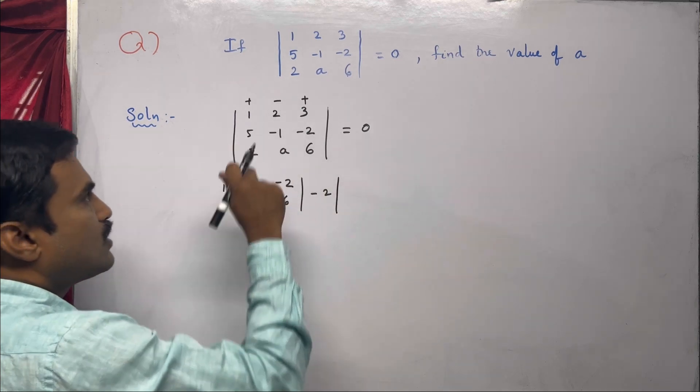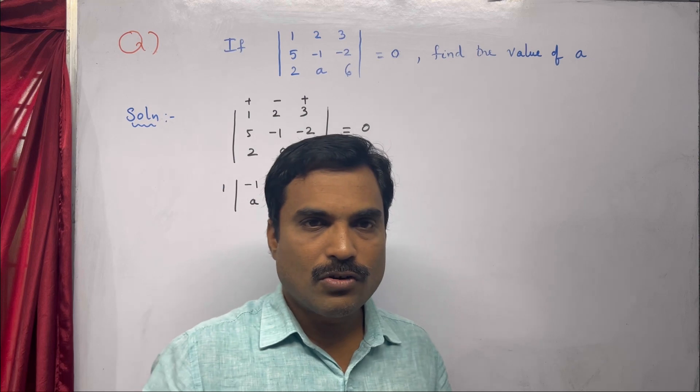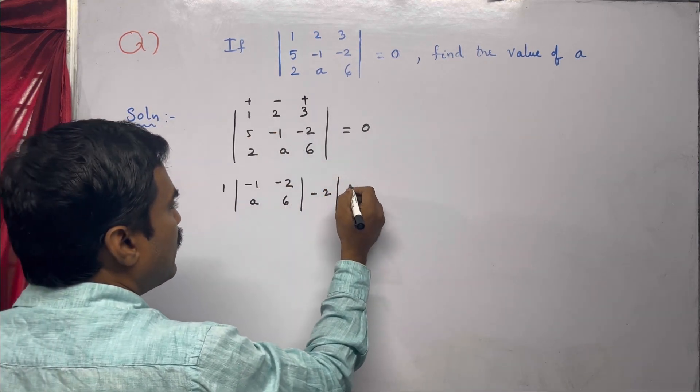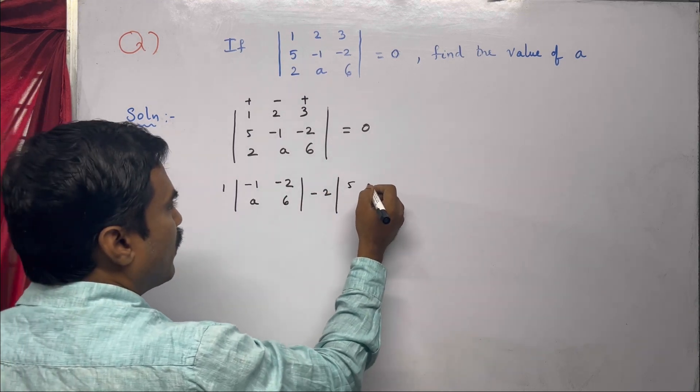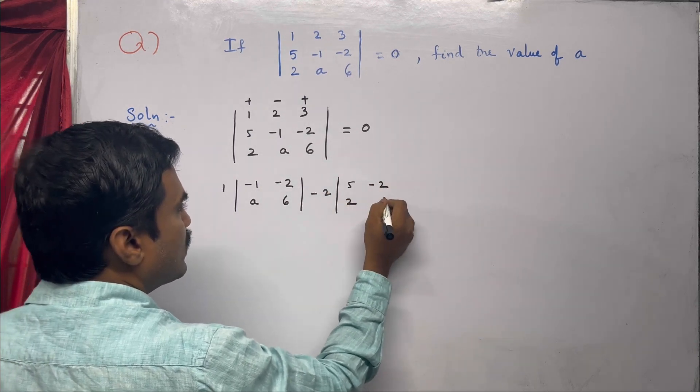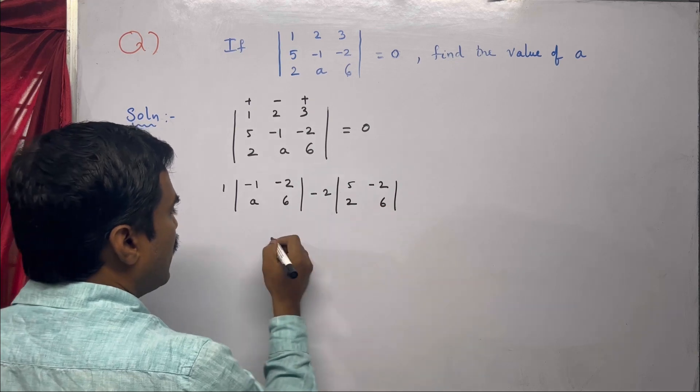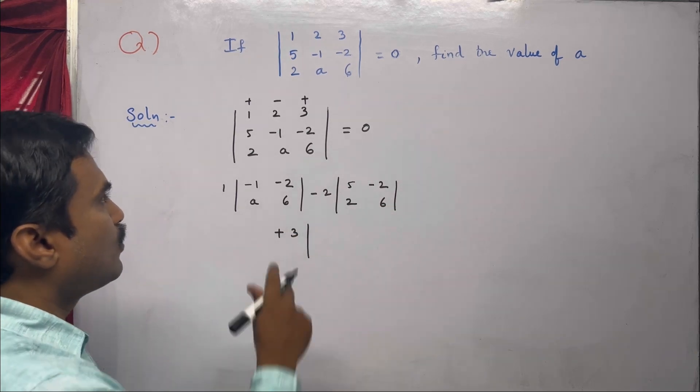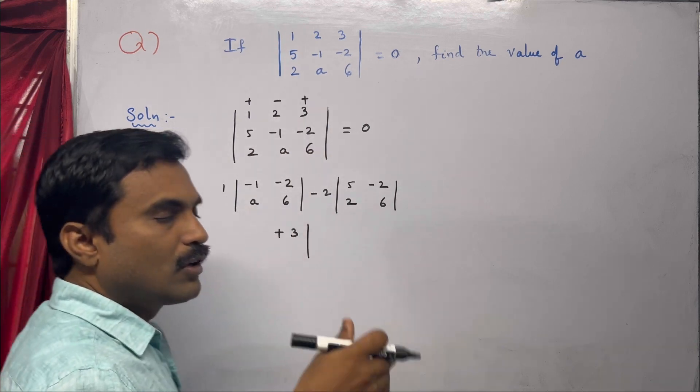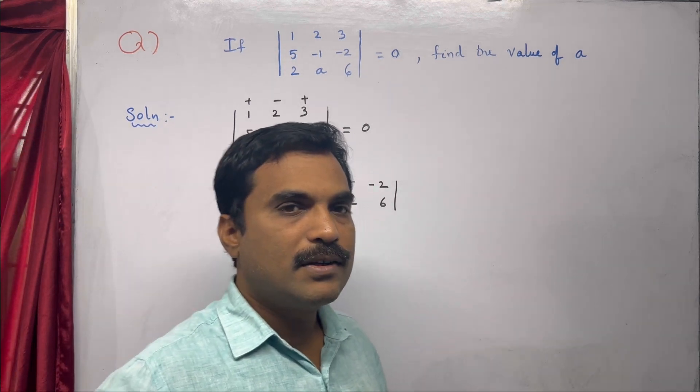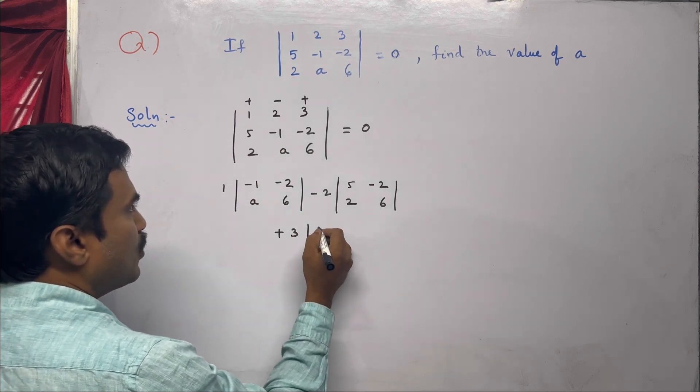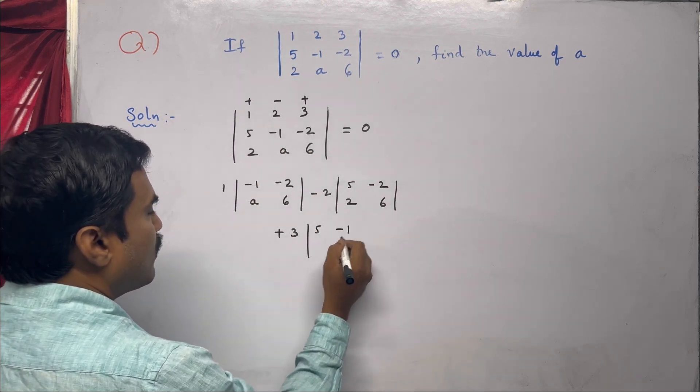Then minus 2: since 2 is in the first row and second column, we leave those and form a 2x2 determinant with 5, -2, 2, 6. Then plus 3: since 3 is in the first row and third column, we form a determinant with 5, -1, 2, a. The right-hand side equals zero.